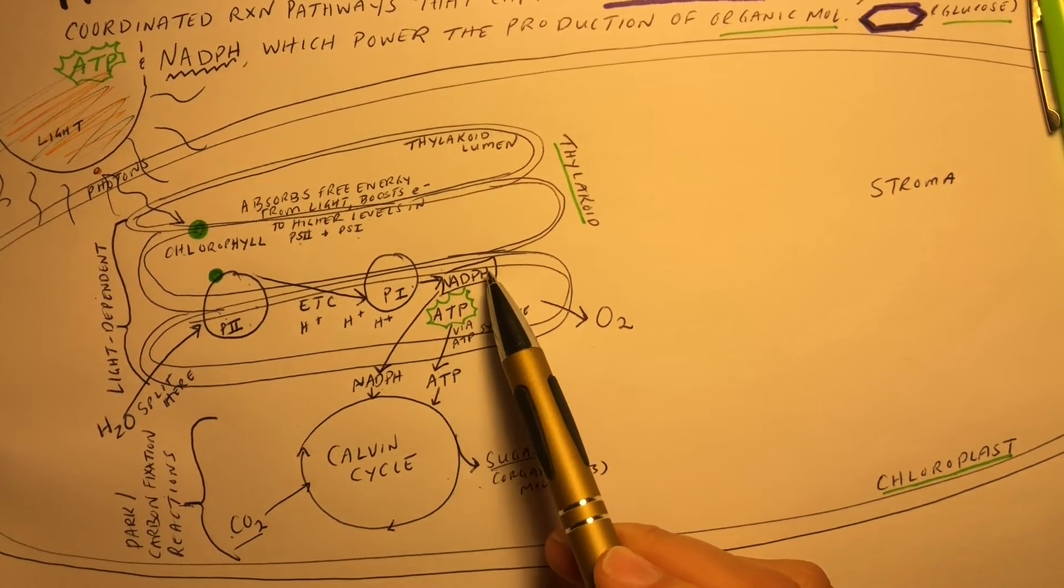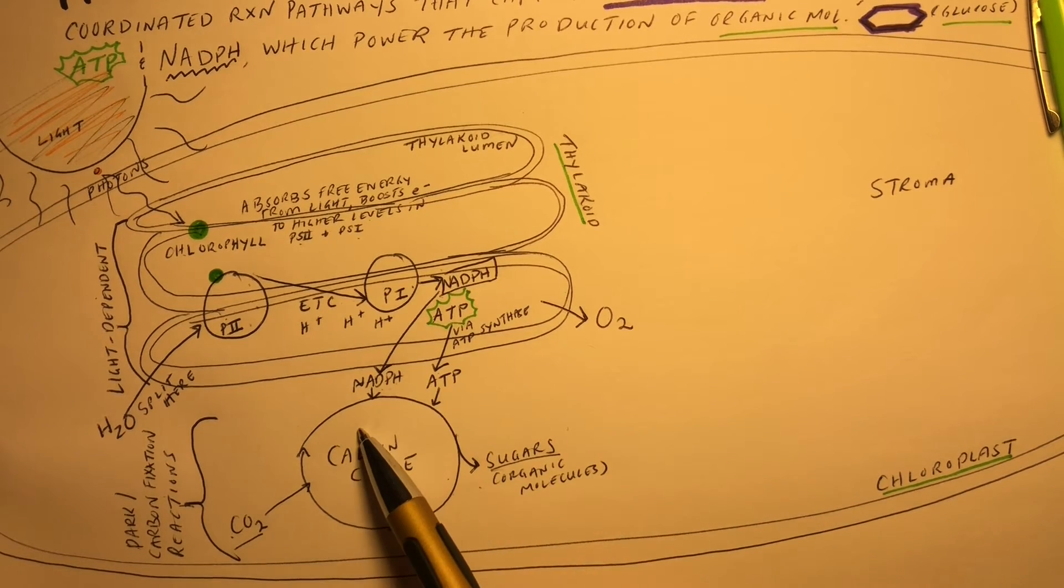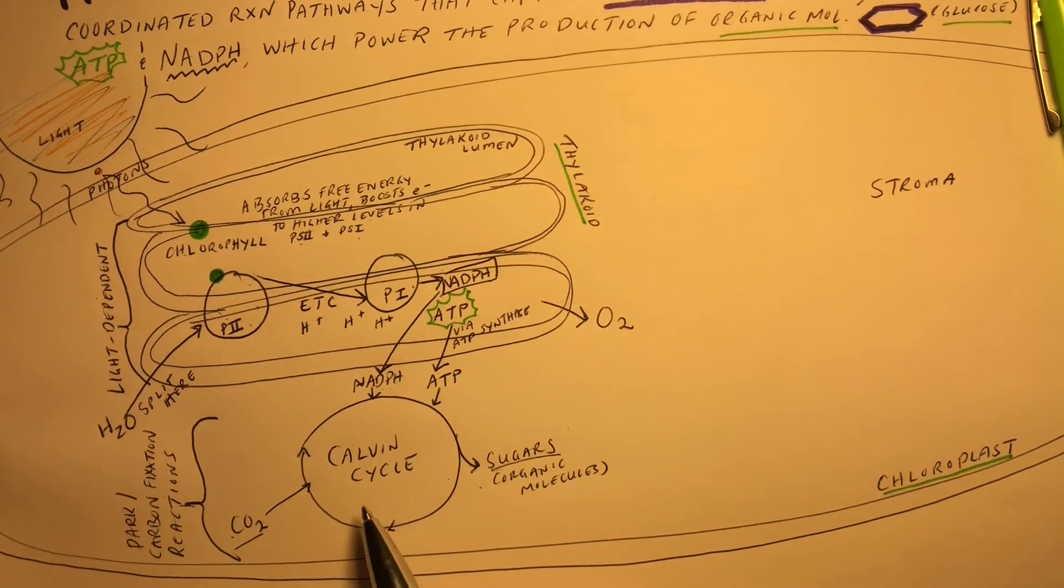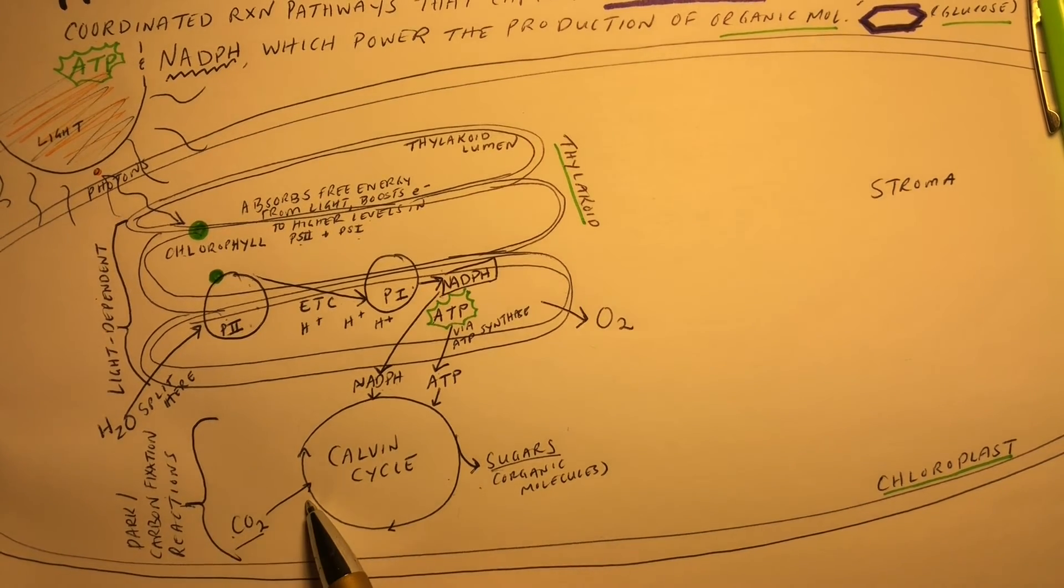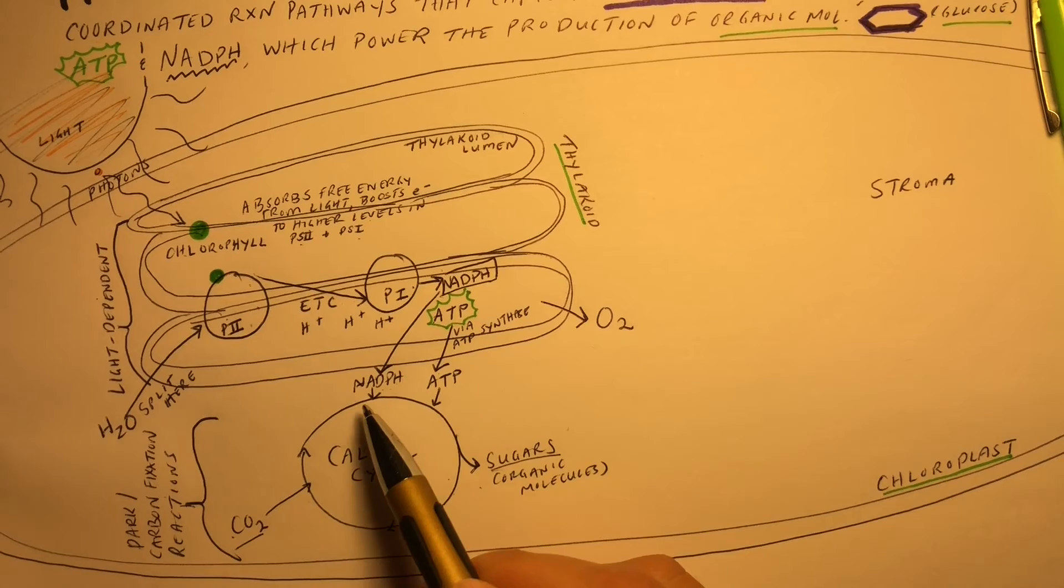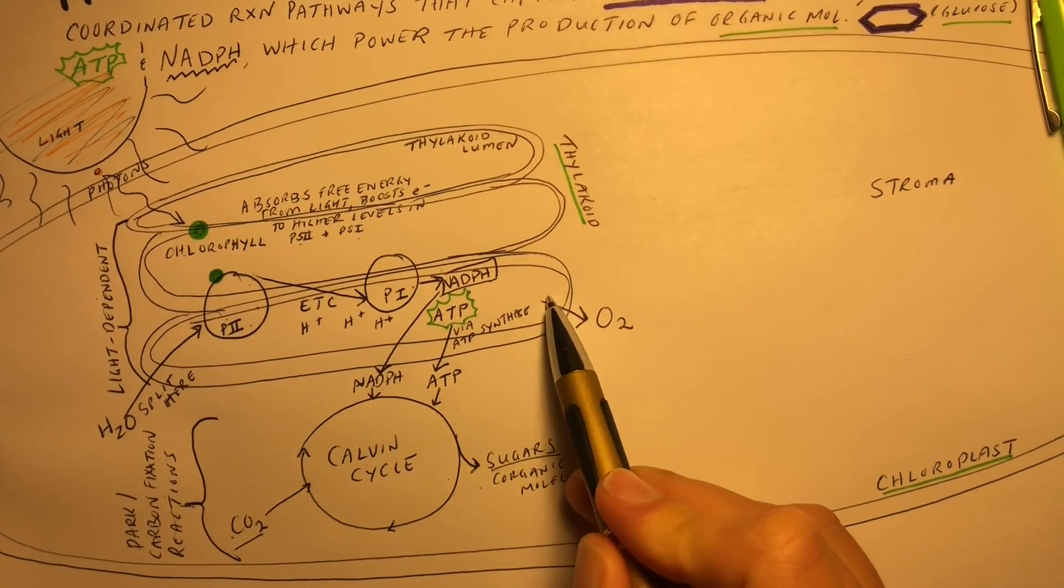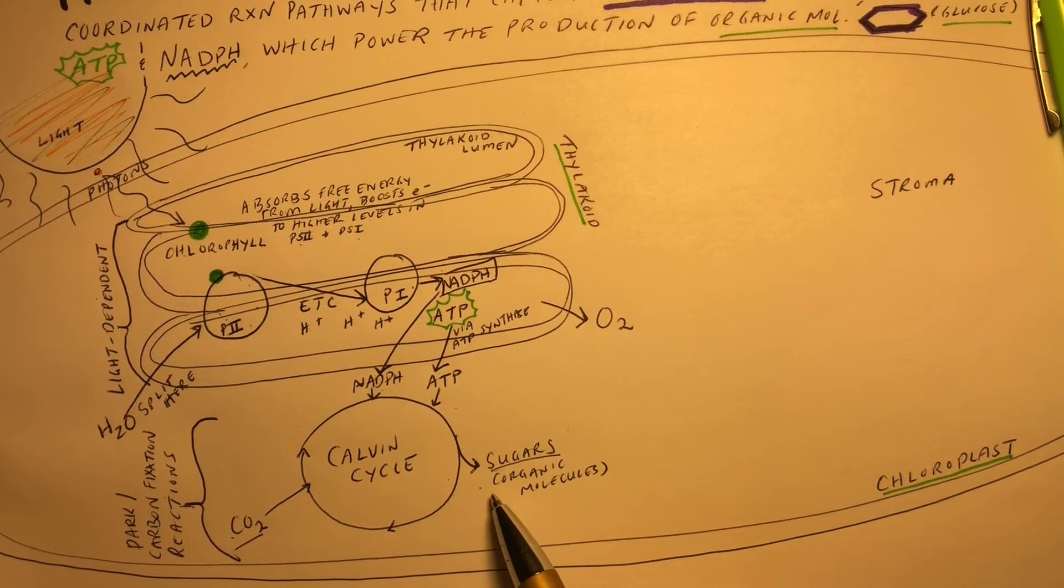NADPH, an electron carrier, also is produced and goes into our dark reactions, or the Calvin cycle. In our Calvin cycle, or carbon fixation reactions, we have carbon dioxide as an input. We use NADPH and ATP generated in the light reactions to produce our organic molecules.